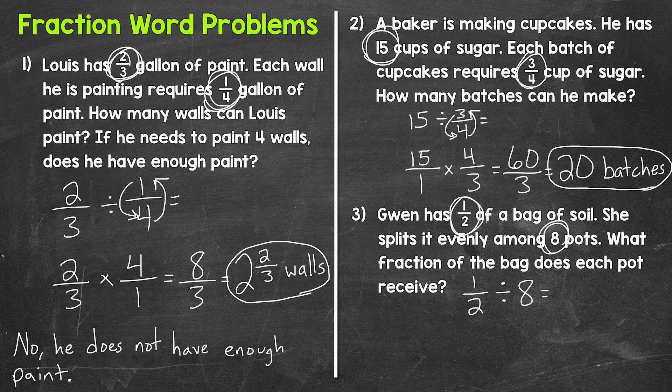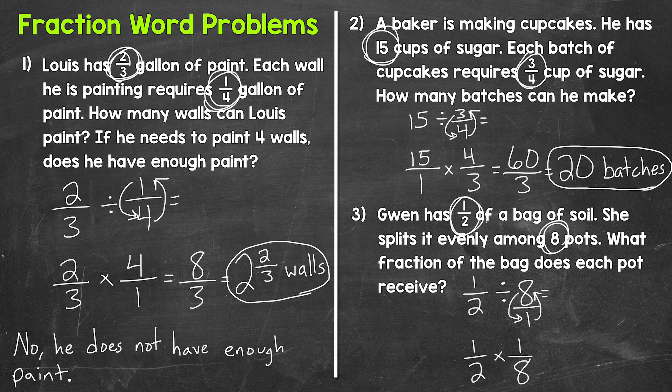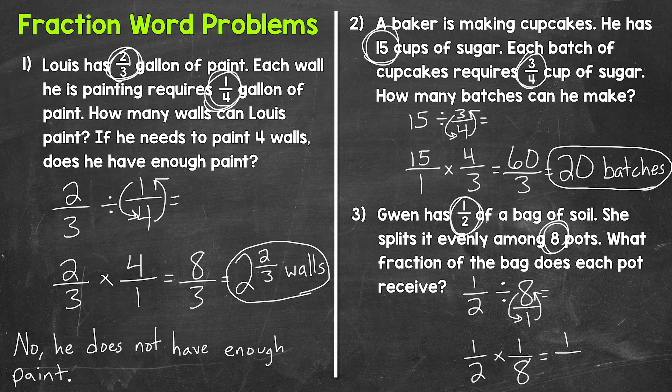So let's keep, switch, flip here. So keep 1 half, switch to multiplication, and then we need to flip 8. So let's write 8 in fractional form by putting it over 1 and now we can flip it. So 1 is our numerator and 8 is our denominator. Now we can multiply. So the numerators, 1 times 1 gives us 1, and then for the denominators, 2 times 8 gives us 16. So our answer here, 1 sixteenth. Looking back at the original question, what fraction of the bag will each pot receive? Well, 1 sixteenth of the bag.